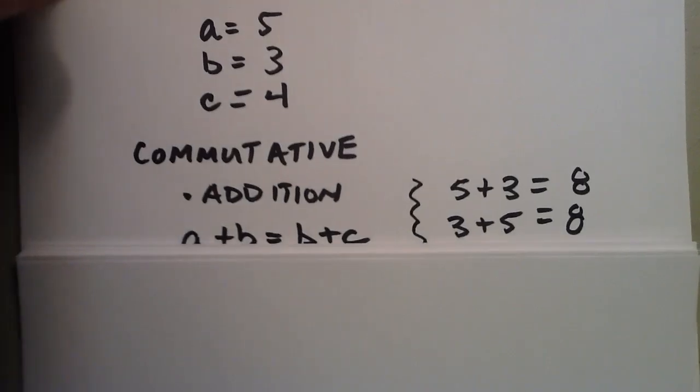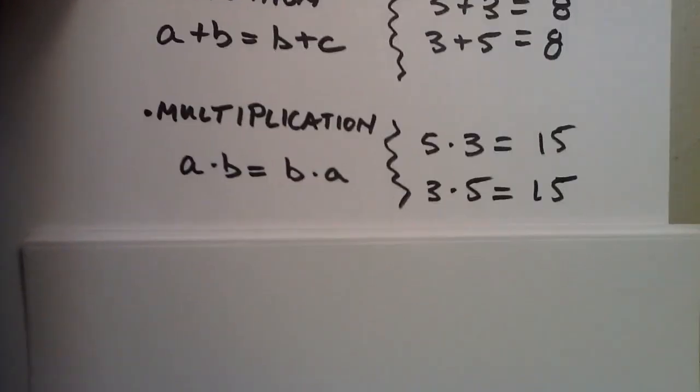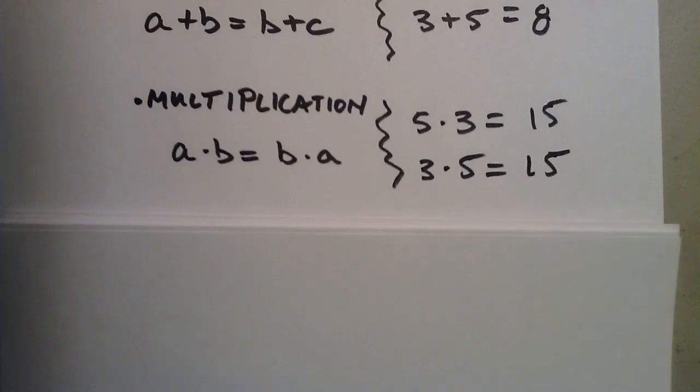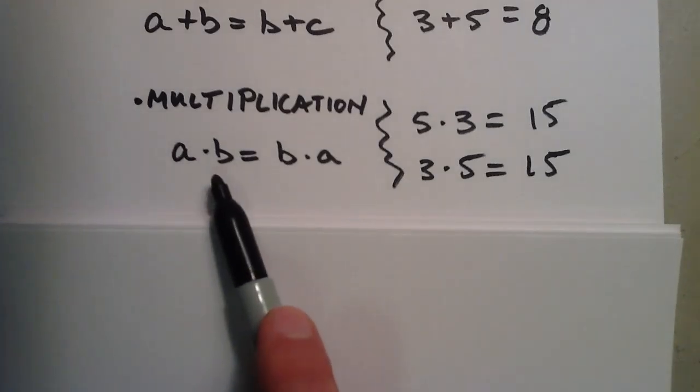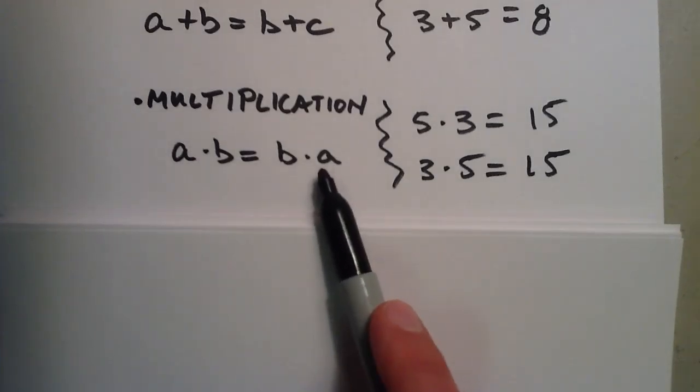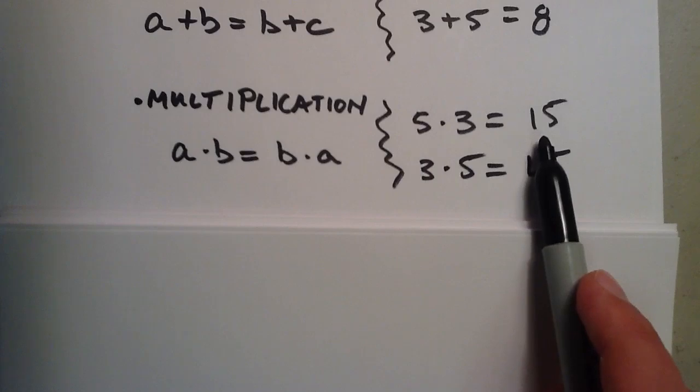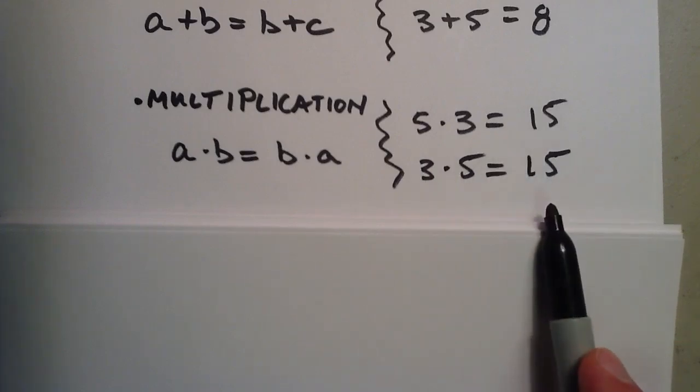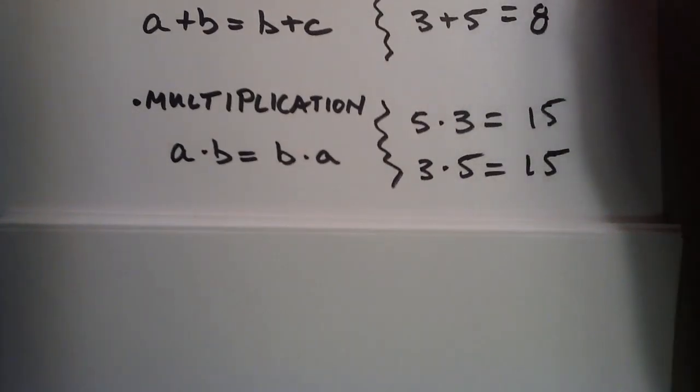The commutative property of multiplication is very similar. It doesn't matter whether you take A times B or B times A, either order, you're going to end up with the same result. Okay, so moving on.